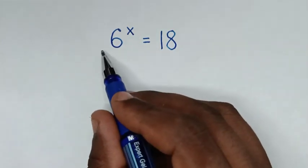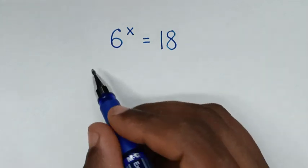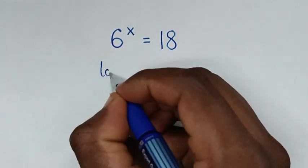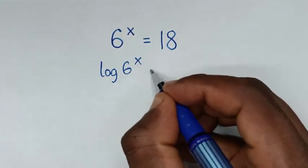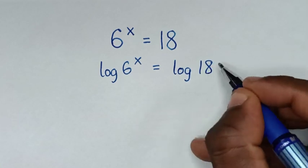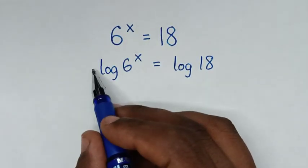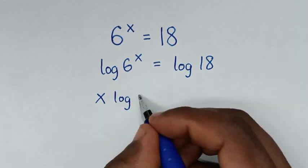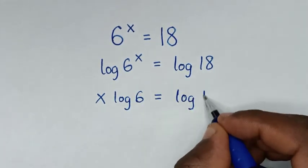To find the value of x from this equation, in the first step we will apply log in both sides. So it will be log of 6 power x is equal to log of 18. Then, this power x will move to the base, so it will be x times log of 6 is equal to log of 18.